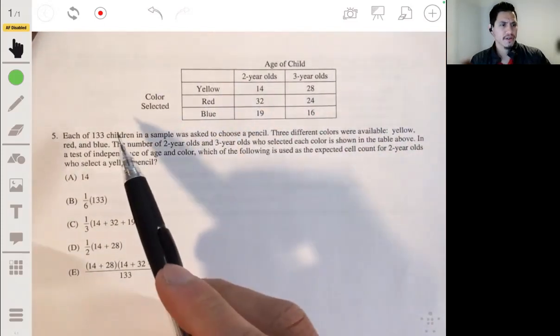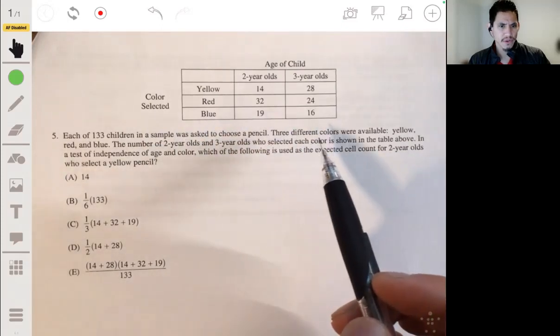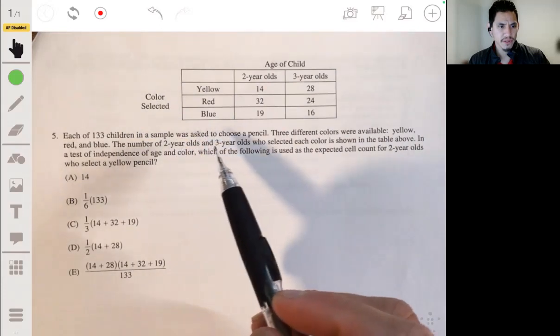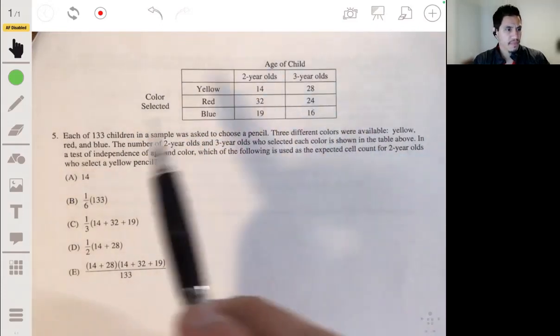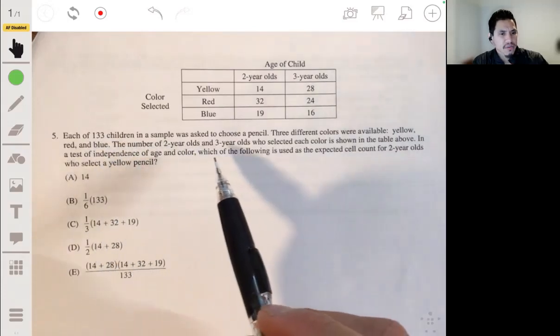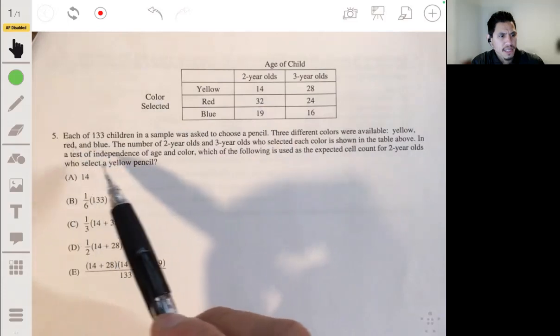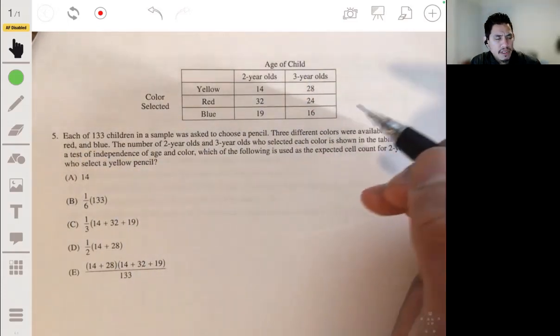All right, each of 133 children in a sample was asked to choose a pencil. Three different colors were available, yellow, red, and blue. The number of two-year-olds and three-year-olds who selected each color is shown in the table above. In a test of independence of age and color, which of the following is used as the expected cell count for two-year-olds who select a yellow pencil? Okay, so remember, expected counts.